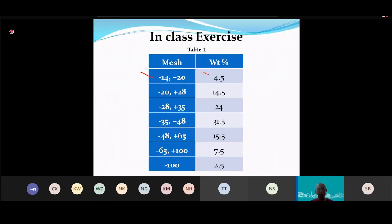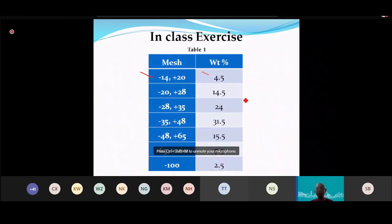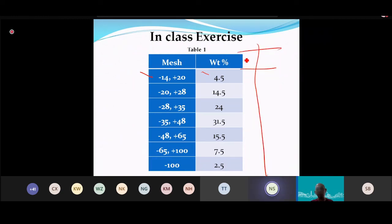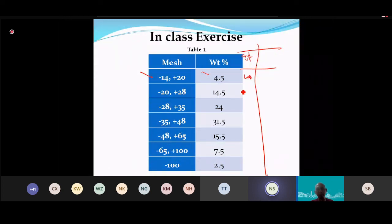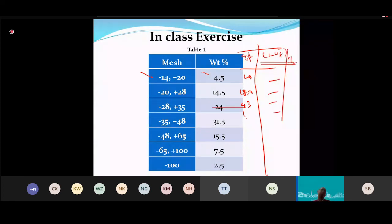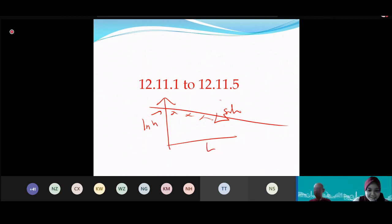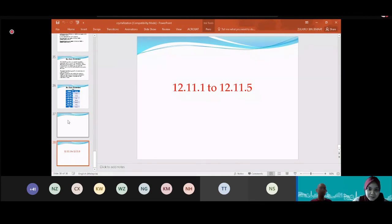A student asked about the error calculation. The percent error compares the theoretical 1−WF prediction to the experimental cumulative weight fraction. For example, if theory gives 4.0 and experiment gives 4.4, the error = (4.0−4.4)/4.0 × 100%.